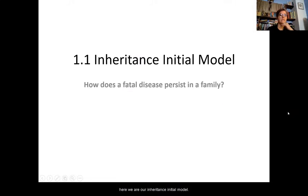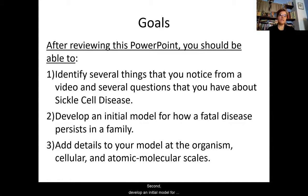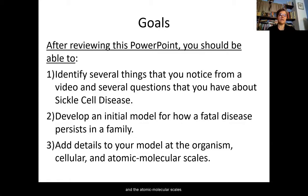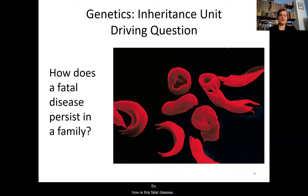So here we are — our inheritance initial model. The question we're going to be asking is: how does a fatal disease persist in a family? The goals are threefold: identify several things you notice and questions you have about sickle cell disease from a video we're going to watch; develop an initial model for how a fatal disease persists in a family; and add details to that model at the organism, cellular, and atomic molecular scales.